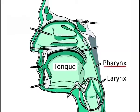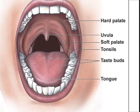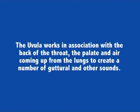The pharynx is the part of the throat just anterior to the mouth and nasal cavity. Both food and breath pass from it and it forms an important part of the vocal cavity. The uvula is a conic projection from the posterior edge of the middle of the soft palate, composed of connective tissue containing a number of mucous glands and some muscular fibers. The uvula, which is a kind of fleshy appendage in the middle of the throat, plays a role in articulating sounds of human speech. It works in association with the back of the throat, the palate, and the air coming up from the lungs to create a number of guttural and other sounds.